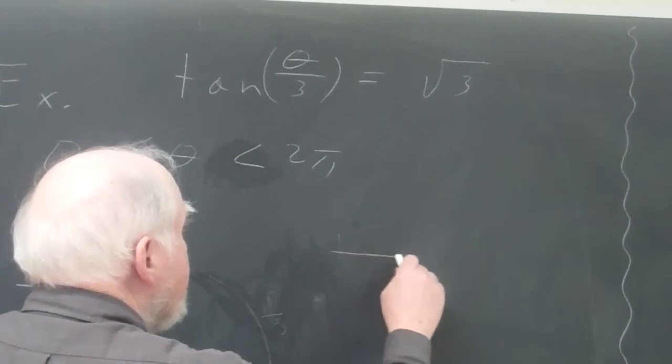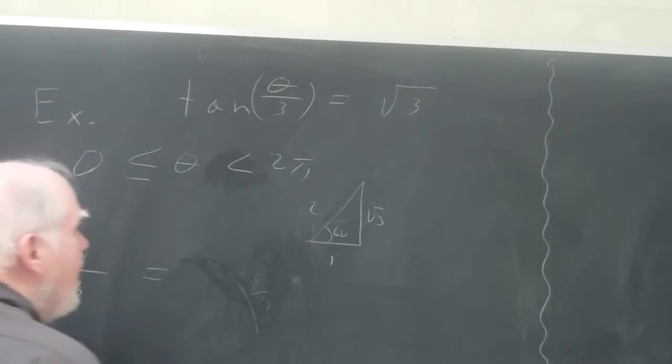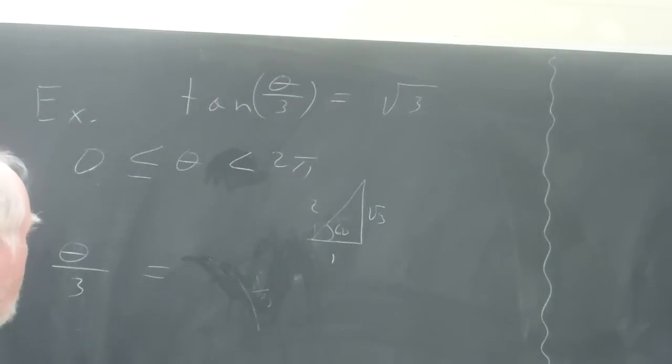And we know the 60 degree angle, I'll just draw it really quickly here. 1, 2, square root of 3, right? Tangent of 60 degrees gives you square root of 3.